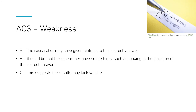However, a weakness is that the researchers were explicitly trying to challenge Piaget's study and likely expected children to perform better on the policeman doll task. This could have led researchers to give subtle hints — perhaps looking in the right direction or nudging children towards the correct answer — making it hard to control for researcher bias. This suggests that while Hughes's study may be more valid than Piaget's, there may still be some lack of validity due to researcher bias. There are more videos looking at Piaget's stages and the application to education.